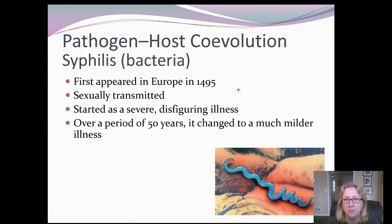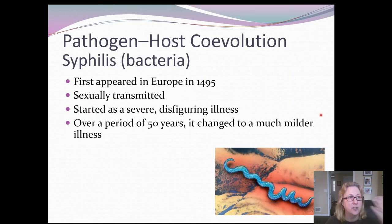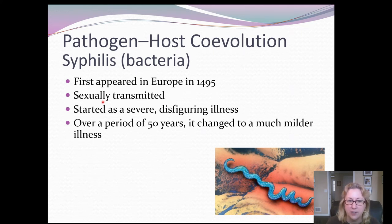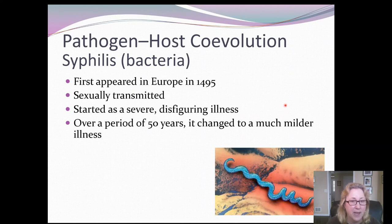So in a very short amount of time it evolved into a much milder disease — and why? Just natural selection. If it's a severe disfiguring disease that is visually obvious and also sexually transmitted, the milder forms of the bacteria are going to have a greater chance of being passed on because you can't see that a person has it.